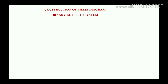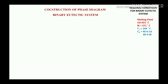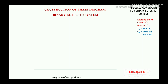Now let's see the construction of the phase diagram for the binary eutectic system. We will use cadmium and bismuth as our example. In liquid phase they have 100% solubility, but in solid phase both act as insoluble solid solutions. Cadmium has a melting point of 321°C, bismuth has 271°C, the eutectic temperature is 144°C, and the eutectic composition is 40% cadmium and 60% bismuth. The x-axis is weight percentage composition and the y-axis is temperature in °C.